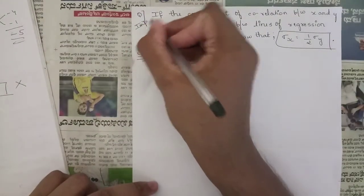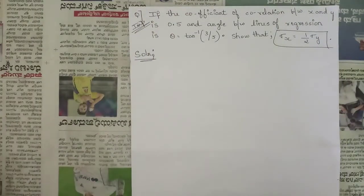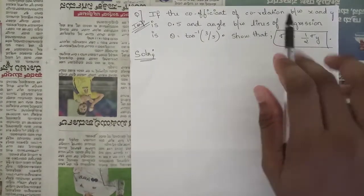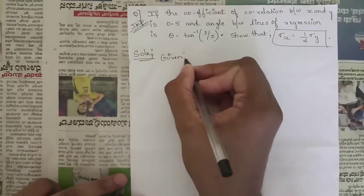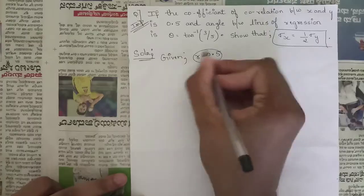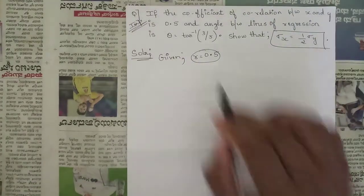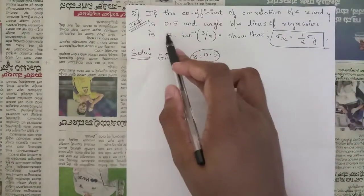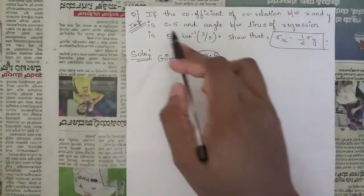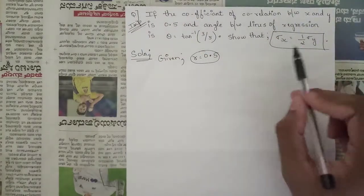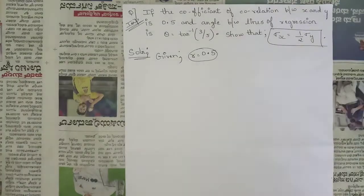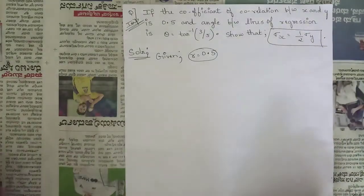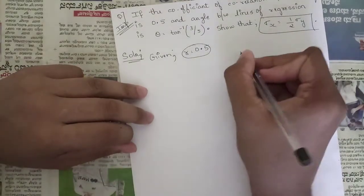So this is that question which is repeated most of the times and is very important. If the coefficient of correlation between x and y is 0.5 — that is, r = 0.5 — and the angle between the lines of regression is given as θ = tan⁻¹(3/5), then we need to show that σx = ½ σy.